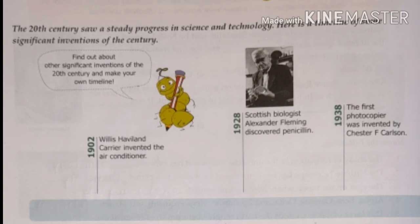Scottish biologist Alexander Fleming discovered penicillin in 1928. Next, the first photocopier was invented by Chester F. Carlson. First photocopier jo bana wo invent huwa tha 1938 mein Chester F. Carlson ke dwara.